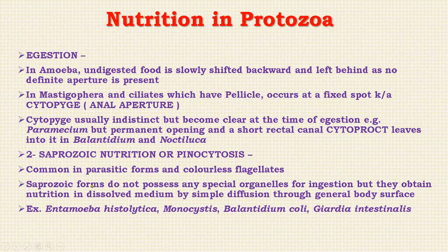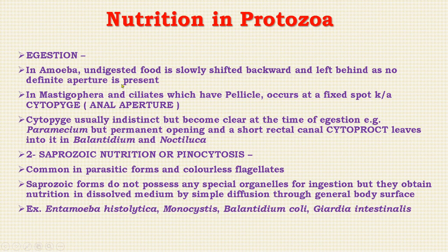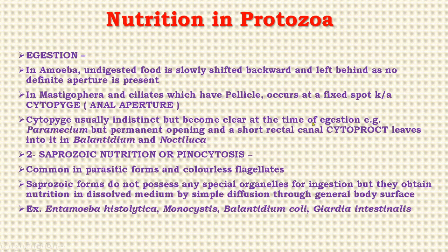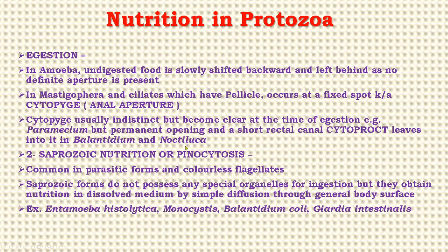For egestion, in amoeba undigested food is slowly shifted backward and left behind, as there is no definite aperture. But in flagellates and ciliates, which are provided with a pellicle, egestion occurs at a fixed spot known as the cytopyge or anal aperture. In Paramecium, the cytopyge is permanent — a short rector canal, cytoproct — examples include Balantidium and Noctiluca.